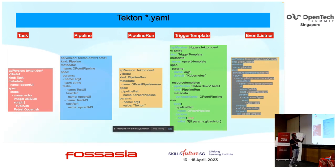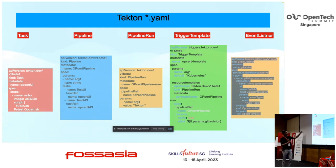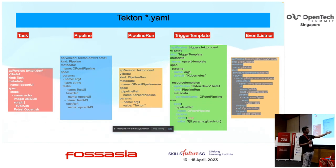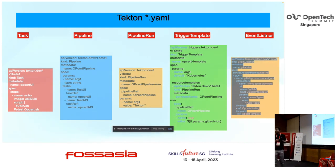You integrate tasks into the pipeline, which defines whether tasks run in parallel or sequentially at a specific time. The pipeline defines how it would trigger, and you can pass all arguments as input and output resources. You have a trigger template and event listener — for example, for Git events with push hooks. You can also integrate it as a webhook, and in GitHub Actions there's an HTTP repository dispatch workflow, so you can trigger your event listener from any HTTP request.